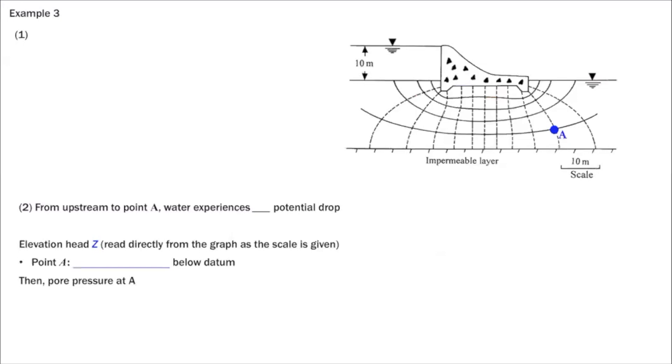So first thing, given the flow net, there are a couple of things we want to find out first. We're going to put reference datum, so let's put datum here. For reference datum, we're going to put it at this downstream water table, which happens to be the ground surface as well. And given this reference datum, then we can define the total head at upstream, H1. In this case, it's 10 meters.